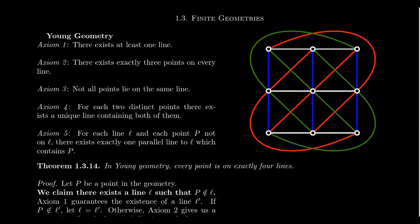This statement was essential in constructing the unique model for Fano geometry. Also, as we discussed Fano geometry, we mentioned that all five axioms are independent — no one axiom is a theorem of the other four. We proved that for axioms 1 through 4 by constructing models where the specific axiom was negated but the other four were satisfied. We didn't do it for axiom 5, and I promised that in this Lecture 5, we would use Young's geometry to prove such a thing.